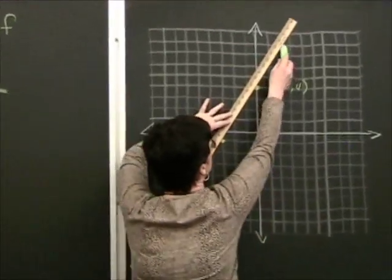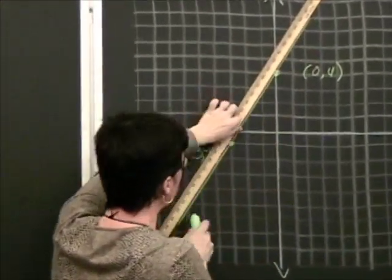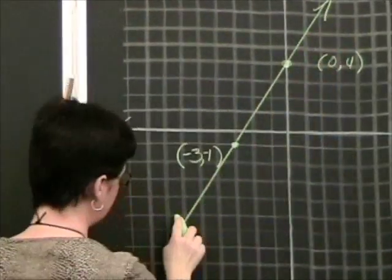Let's go ahead and start with a quick review. We'll start with two points, we'll draw a line through them, and we'll go ahead and examine the slope.